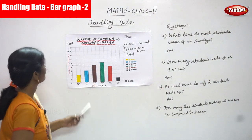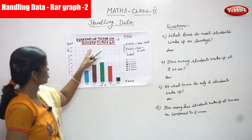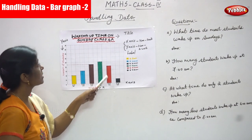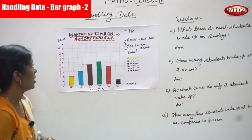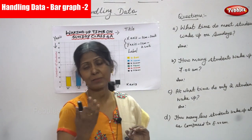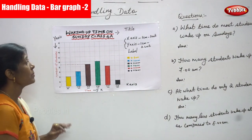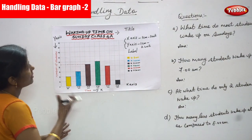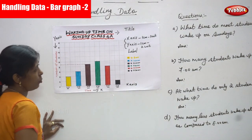Now we are going to do the second sum. Waking up time on Sunday, class 4A. So class 4A students — their waking up time is given in the bar graph. Class 4A students on Sunday, their waking up time is given in the bar graph. Sunday means everyone gets up late. The students also get up late on Sunday because every day they are going to school and they get tired. So all the students of class 4A — their waking time is given in the bar graph.